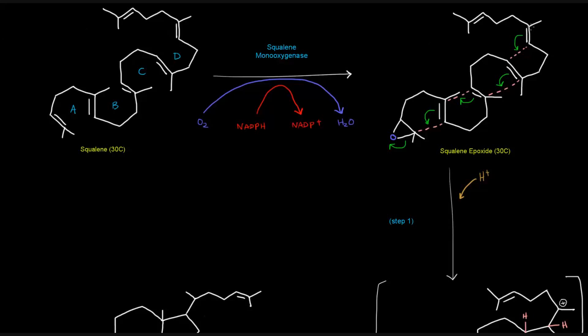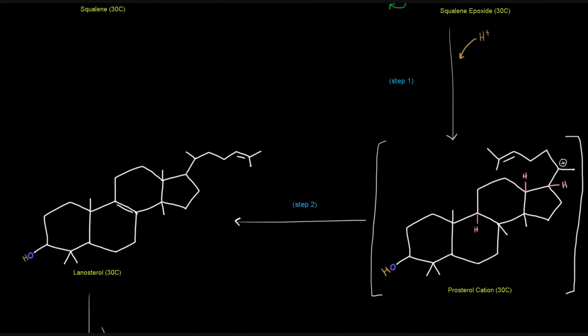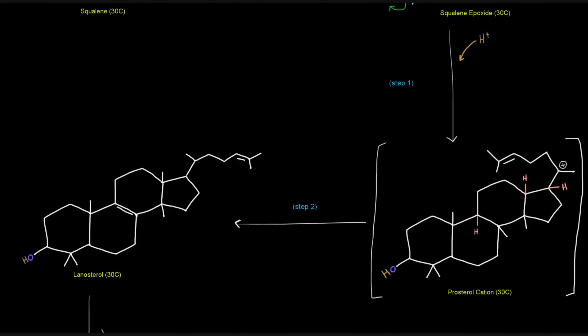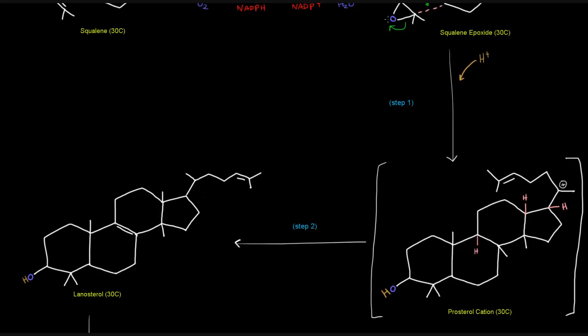this carbon here has that positive charge, that formal charge. So this prosteryl cation results, and the negative charge on this oxygen that resulted from this squalene epoxide breaking up here would get that H plus there that protonates that oxygen. And then we have our four rings. We have our steroid nucleus in this prosteryl cation, A, B, C, and D rings.